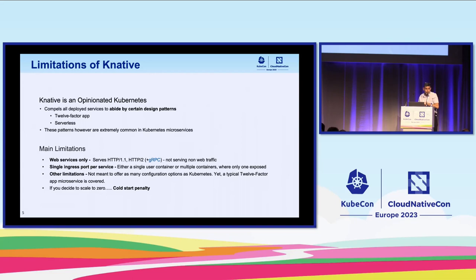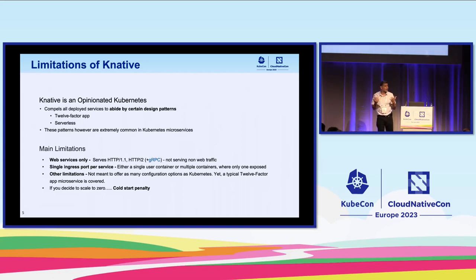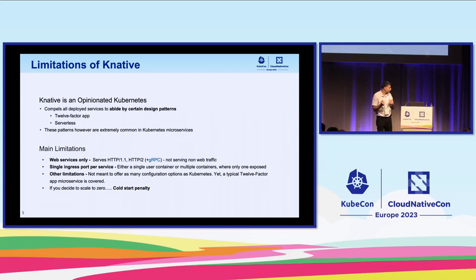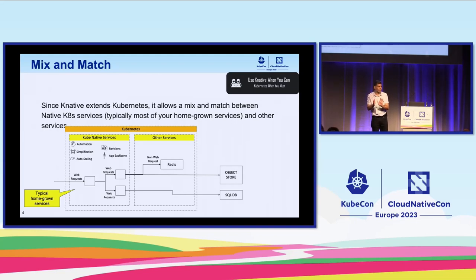Limitations: Knative is an opinionated system, so you can't do everything with it — you can't deploy an SQL database with it. It suits your homegrown microservices. For services that don't fit the pattern, you just use Kubernetes directly. It's a mix-and-match approach: Kubernetes for anything that doesn't fit, Knative for everything that does, which is normally your homegrown microservices.